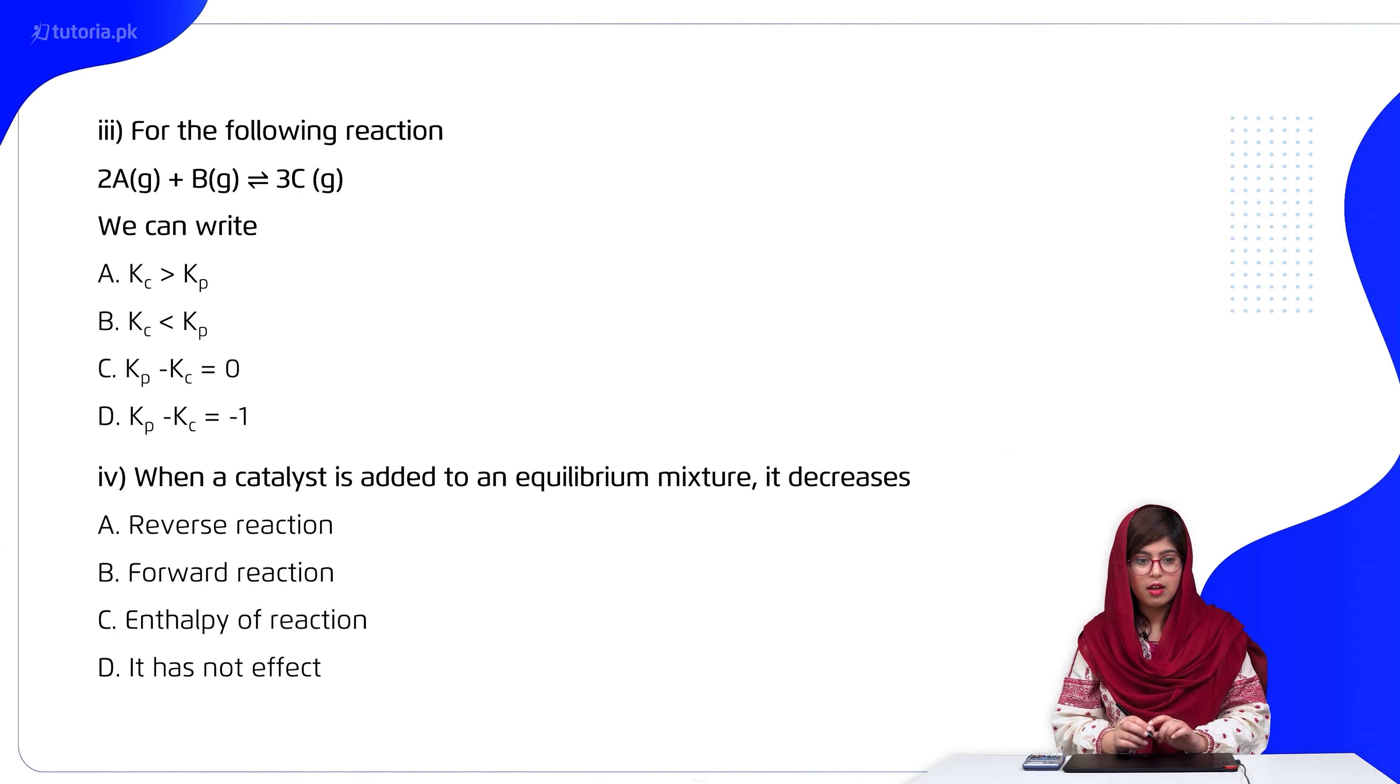Next students, for the following reaction 2A + B gives us 3C, we can write: A. Kc is greater than Kp, B. Kp is greater than Kc, C. Kp minus Kc equals zero, D. Kp minus Kc equals minus one.